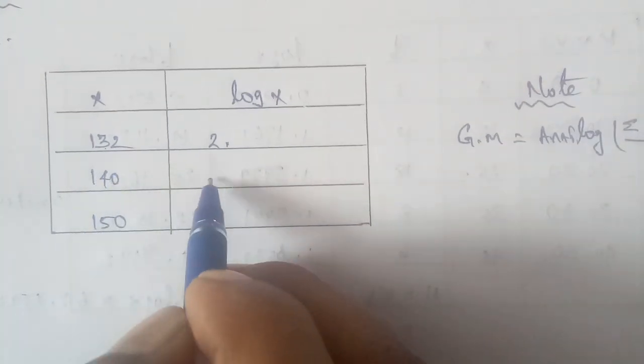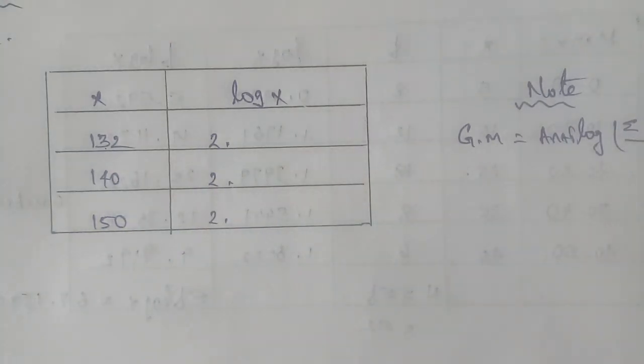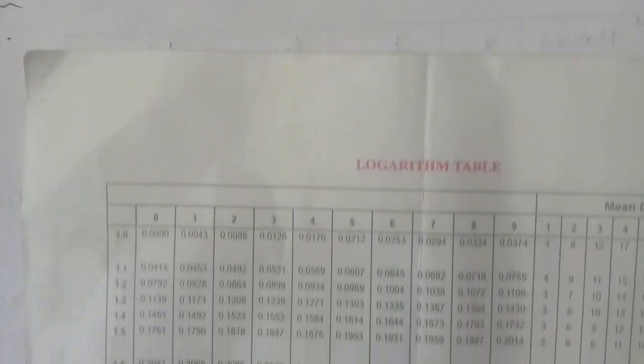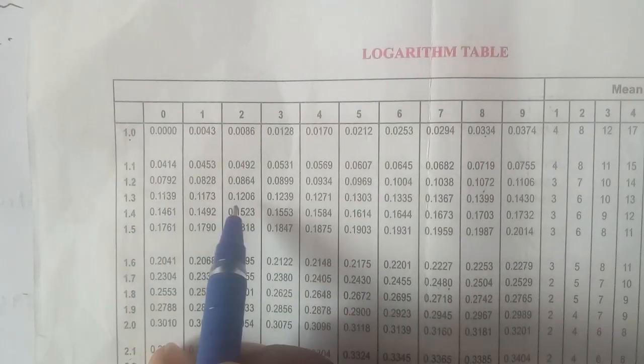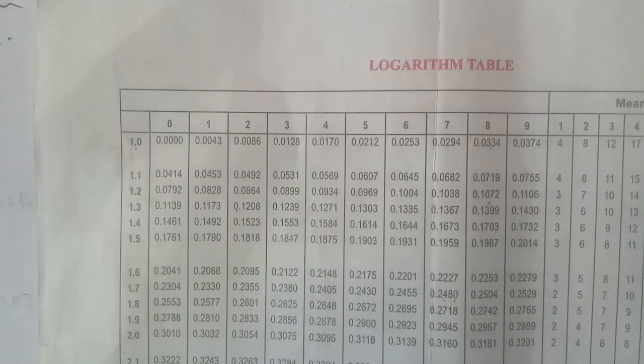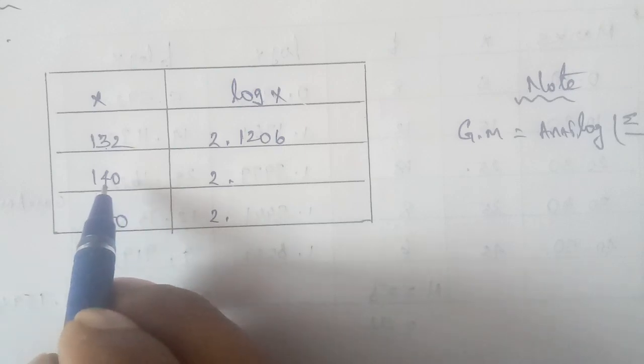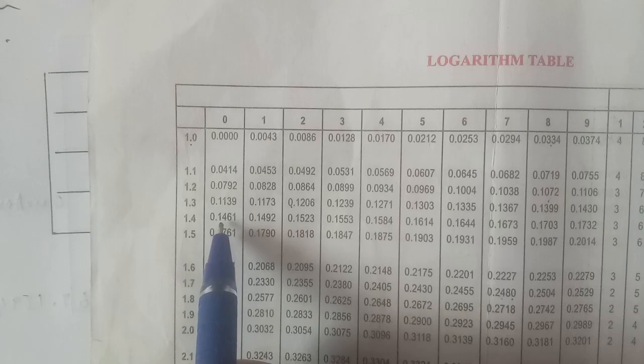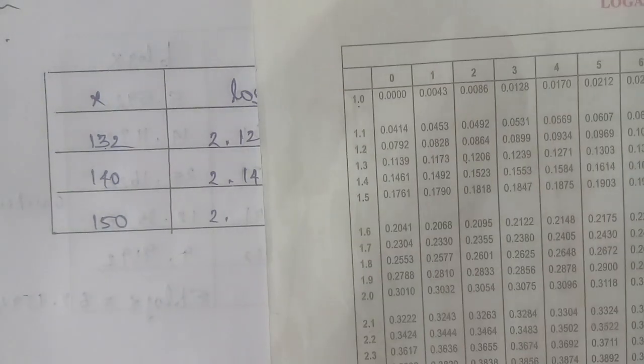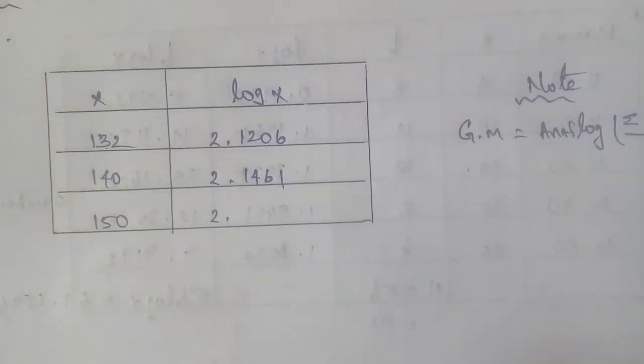Now, here the number of digits is three. First number is 132. Log of 1.32 is 0.1206. Second number is 140, which is 1.4. Then the third number is 150, which is 1.5. Log of 1.5 is 0.176.